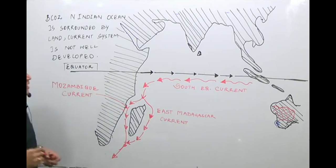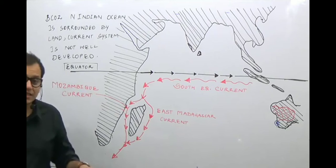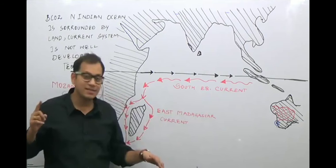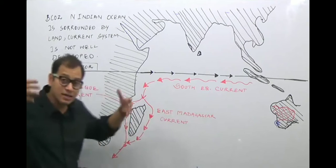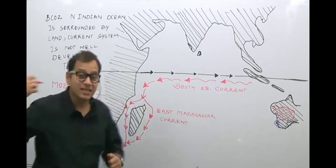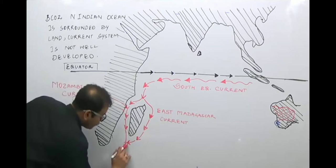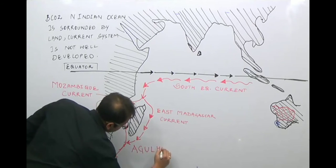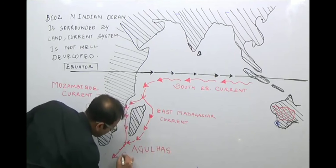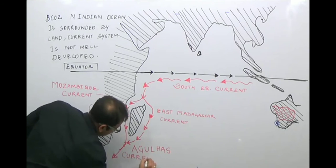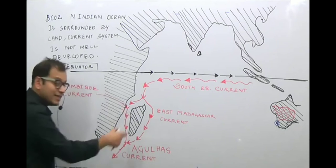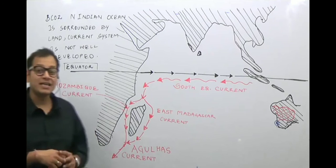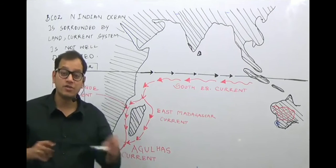So the major warm ocean currents of the Southern Indian Ocean are: the South Equatorial Current, the East Madagascar Current, and the Mozambique Current. Both the Mozambique Current and the South Equatorial Current join together to form a larger current known as the Agulhas Current, located at the southern tip of eastern Africa. These are the important warm ocean currents of the Indian Ocean.